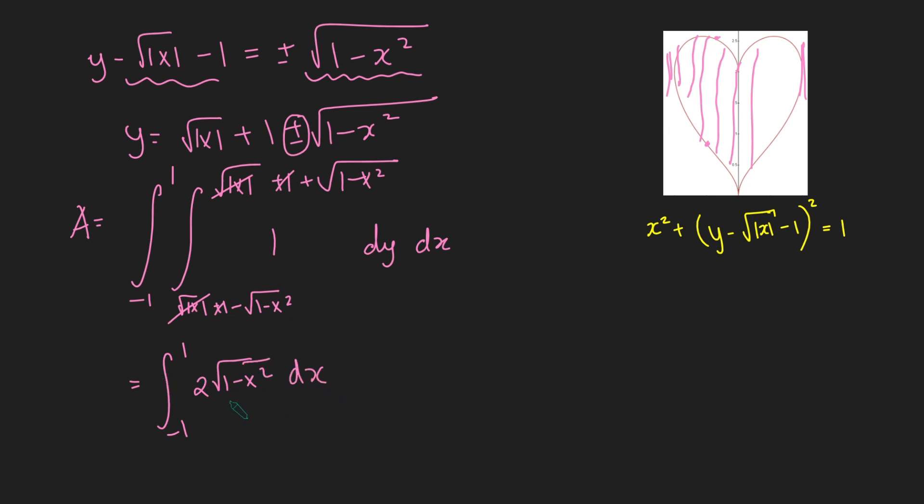Very nice. So we get that this area, the area of this heart, is just equal to this integral here. And we've got the square root of 1 minus x squared here. So this motivates a trig substitution. So we're just going to say x equals sine of theta. And in doing so, we get dx equals cos theta d theta.